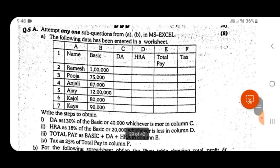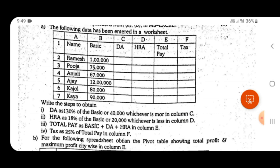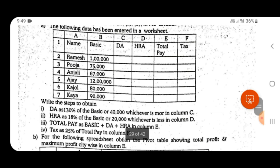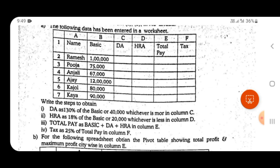For question number five, an Excel scenario is given and you have to solve sub-questions by writing the steps. You don't need to write many steps — simple steps work, such as selecting a particular cell, entering a formula, or clicking. Normally three steps are enough. For example, to calculate DA: Step 1 — select cell C2; Step 2 — type the formula; Step 3 — drag the cell formula down to the remaining cells.